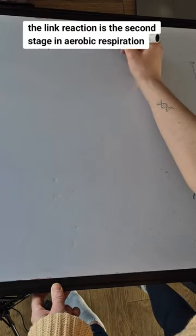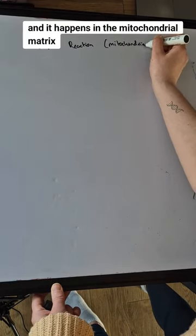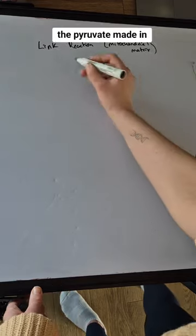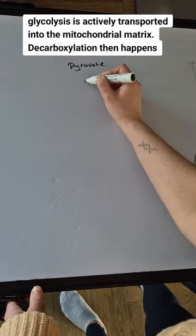The link reaction is the second stage in aerobic respiration, and it happens in the mitochondrial matrix. The pyruvate made in glycolysis is actively transported into the mitochondrial matrix.